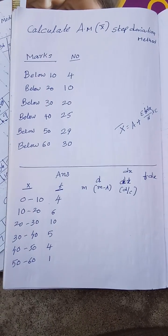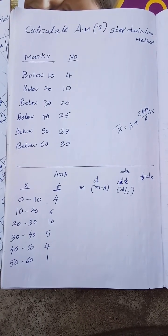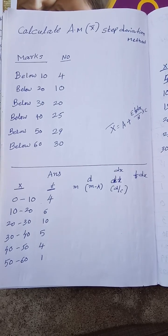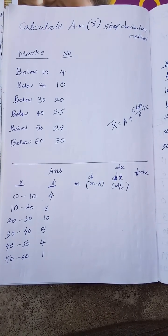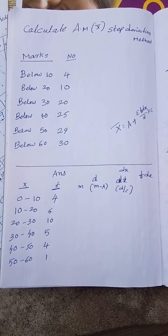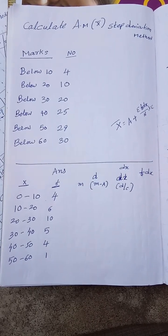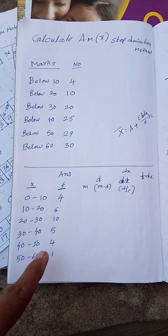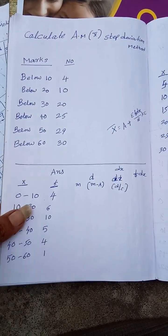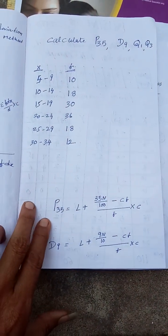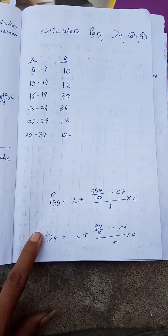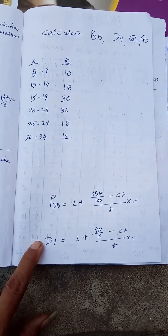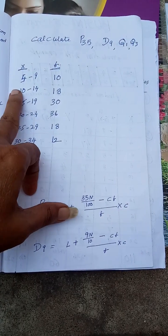My dear students, business statistics long answer questions are very important. Practice these thoroughly till your exam. When data is given in 'below' format and rearranged, it's called frequency distribution. You could solve problems like calculating P35 using the formula 0.5 minus 10.